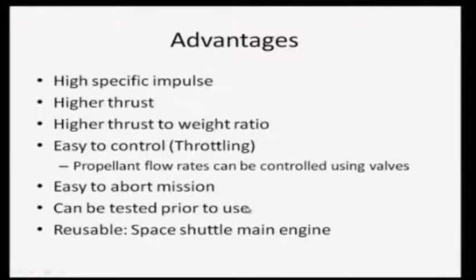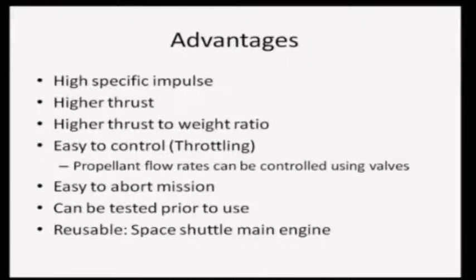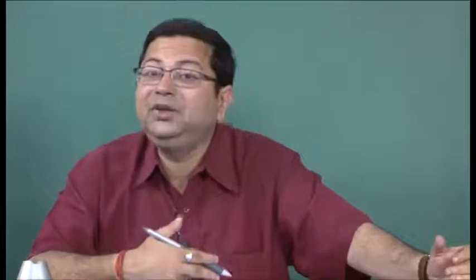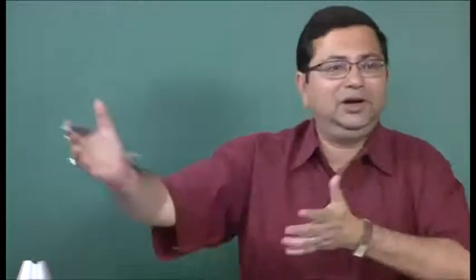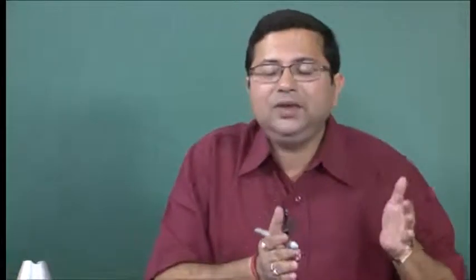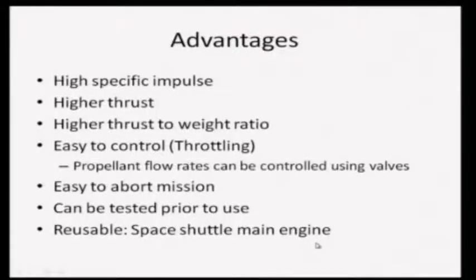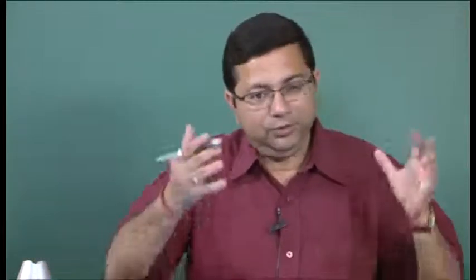Unlike solid propellant rockets, where once you create the grain and fire it, it is gone and you must produce another grain to test the system, liquid propellant rockets can be tested before firing. You can refill the tanks and test the system again. This also gives flexibility to test different fuel-oxidizer combinations. The development is more scientific and the rockets are very reusable. The Space Shuttle main engine uses liquid propellant rockets — the thrust chamber, pumps, and everything can be retained, with only the tanks typically being discarded.